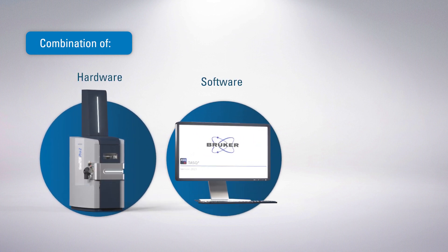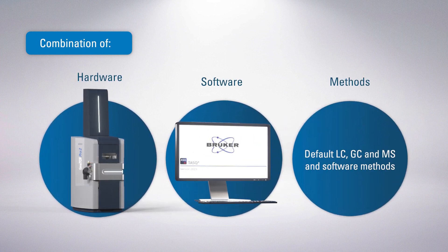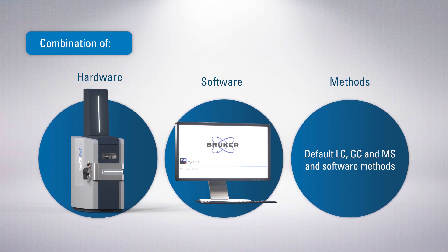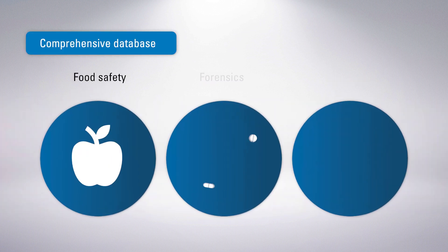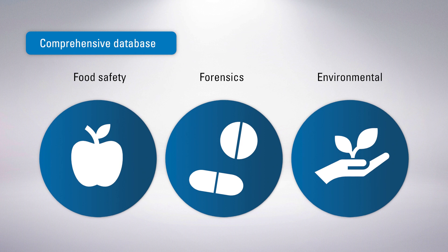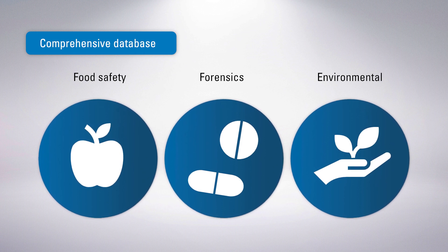Target Screener 4D provides a holistic view — a complete, ready-to-use solution integrating hardware, software, and curated default methods. Using a comprehensive database of food safety, forensics, and environmental pollutants, samples are thoroughly evaluated.